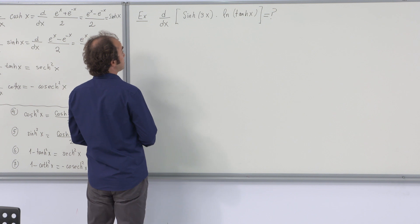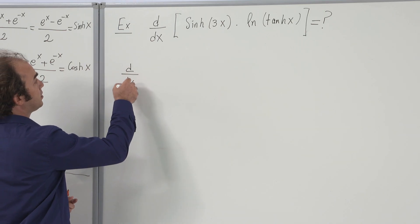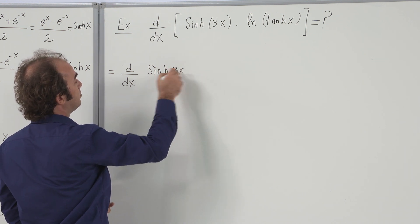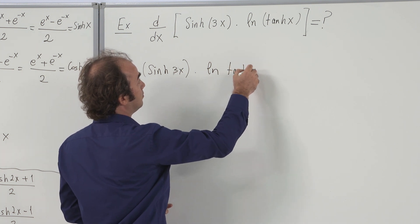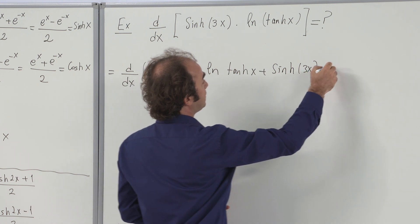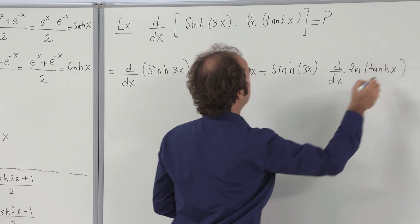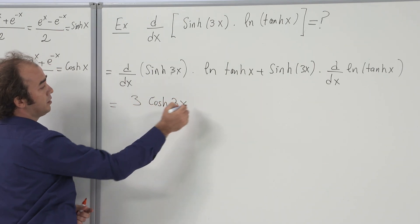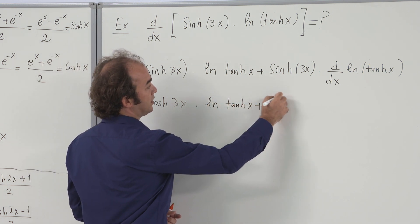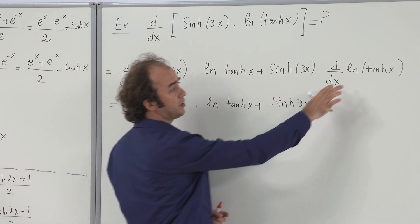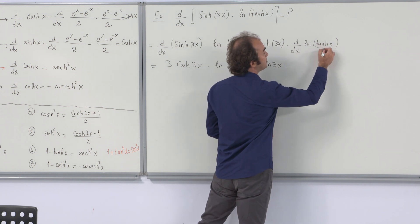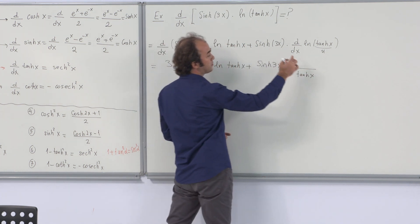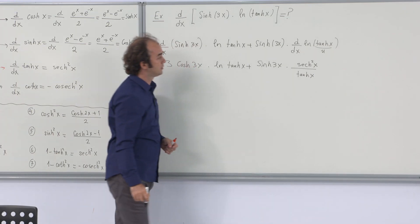Let's pass to our final examples. The first is differentiating a product: d/dx of [cosh(3x) · ln(tanh x)]. By the product rule, this equals the derivative of cosh(3x) — which is 3 sinh(3x) — times ln(tanh x), plus cosh(3x) times the derivative of ln(tanh x). Since the derivative of ln(u) is u′/u, we put tanh x in the denominator and its derivative, sech²x, in the numerator.